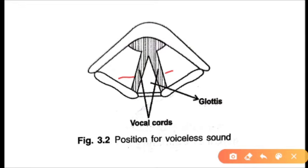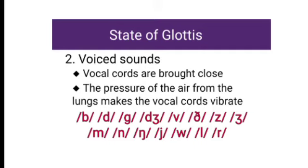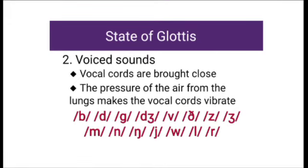The next classification is voiced sounds — it is just the opposite of voiceless sound. Here, the pressure of the air from the lungs makes the vocal cords vibrate. The vocal cords vibrate and a buzzing sound can be heard. So voiced sounds are produced. These are the examples of voiced consonants in English: B, D, G, J, V, ð, Z, ʒ, M, N, ŋ, Y, W, L, and R.